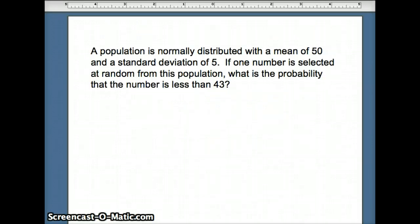Here's an example. A population is normally distributed with a mean of 50 and a standard deviation of 5. If one number is selected at random from this population, what is the probability that number is less than 43?